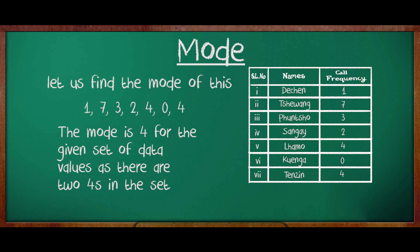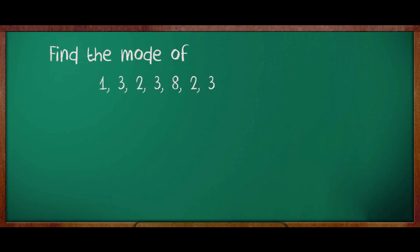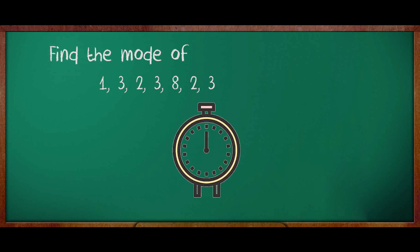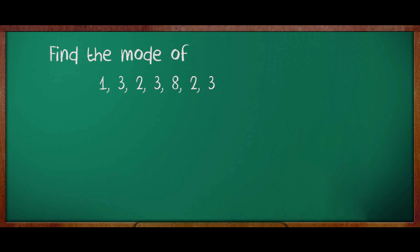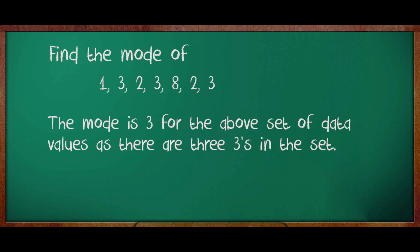There are two 4s in the set. Now, children, can you see some numbers on the board? Those are values of the set of data. Using this set of data, find the mode. What is the mode that you have got? The mode is 3 for the above set of data values. There are three 3s in the set.